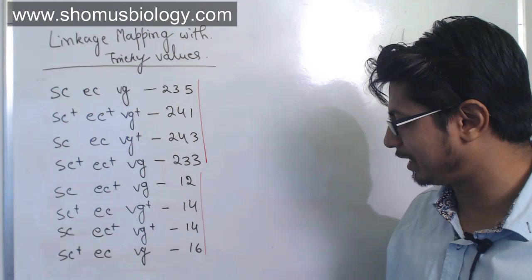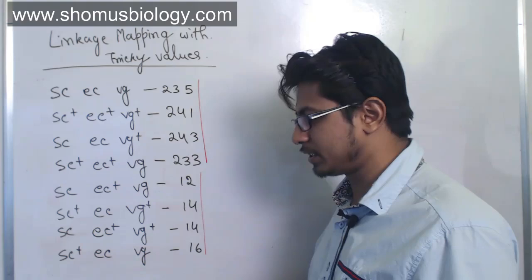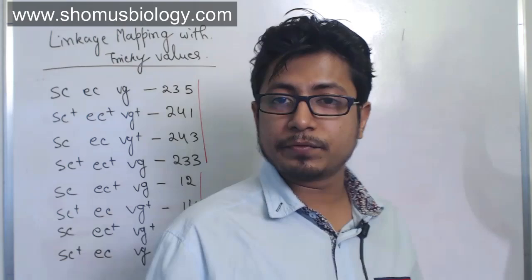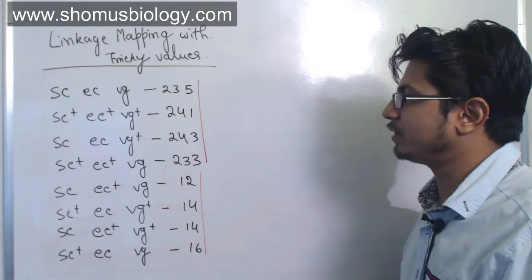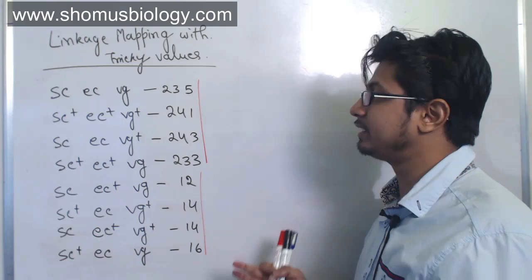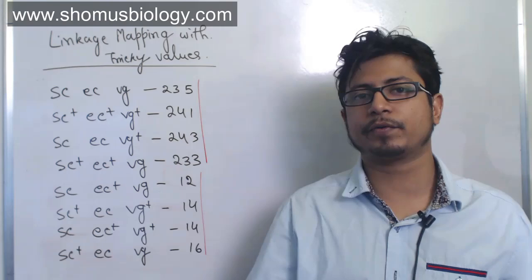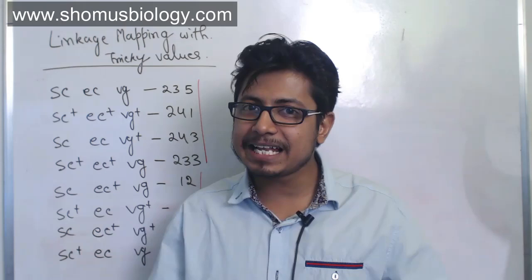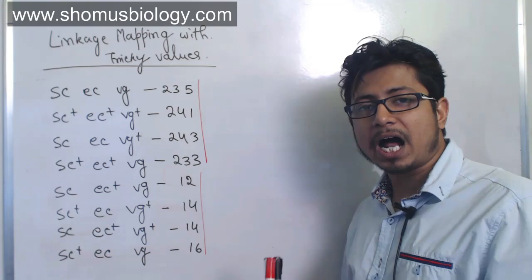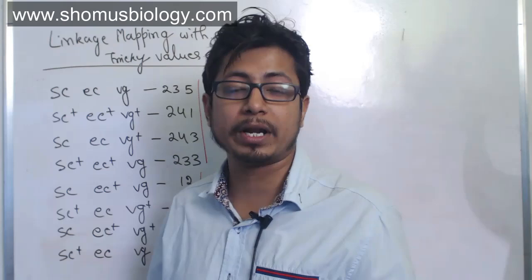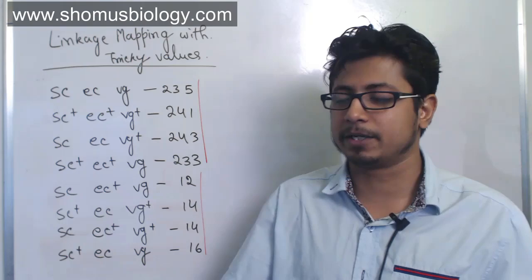What you should do is use a separate approach to solve this type of dataset problem. Let's say the question is: find the recombination frequency between SC and VG, and tell us whether SC and VG are linked. We can determine whether two genes are on the same chromosome by looking at the recombination frequency. If the frequency is less than 50%, then those two genes are on the same chromosome. If the frequency is more than 50% — even 50.1% — those two genes are not linked.